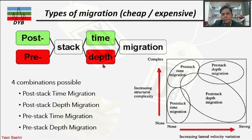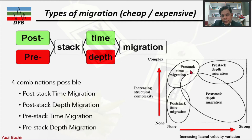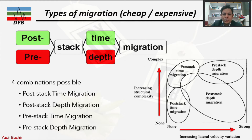Post-stack depth migration covers a wider range but the subsurface geology is still not overly complex. Pre-stack time migration is used when you have structural complexity with some lateral velocity changes. If you have both high structural complexity and significant lateral velocity changes, you need to go for pre-stack depth migration. These factors determine which migration strategy to choose.